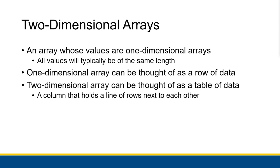We can think of a one-dimensional array as a row of data where every piece of data has its own cell, and all these cells are connected next to each other in a line. That's the example I've been working with between strings and one-dimensional arrays — you just have this horizontal line of data. A two-dimensional array, though, can be thought of as a table of data.